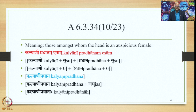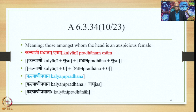The meaning is 'those amongst whom the head is an auspicious female.' The laukika vigraha is Kalyani Pradhanam Esham, and the alaukika vigraha is Kalyani plus Su plus Pradhana plus Su. Samasa Saudhnya takes place, then Pratipadika Saudhnya, then Supodhatup Pratipadika Yoho deletes both Sups. So we have Kalyani plus zero plus Pradhana plus zero, giving the Bahuvrihi Samasa output Kalyani Pradhana. Adding suffix Jas gives the form Kalyani Pradhanaha.